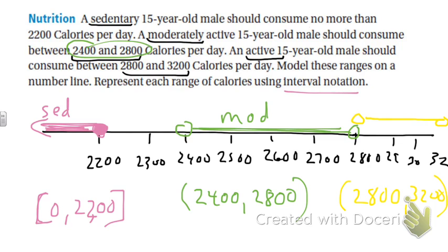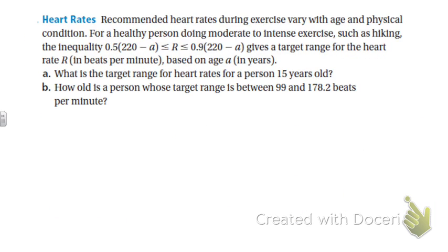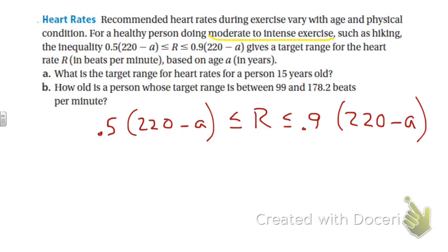Okay, we keep moving. This one is a doozy. Recommended heart rates during exercise vary with age and physical condition. For a healthy person doing moderate to intense exercise, there's an inequality they give you: 0.5 times (220 minus a) less than or equal to r less than or equal to 0.9 times (220 minus a). Now you got a and r both in here - don't get scared, okay? They're going to give us something.